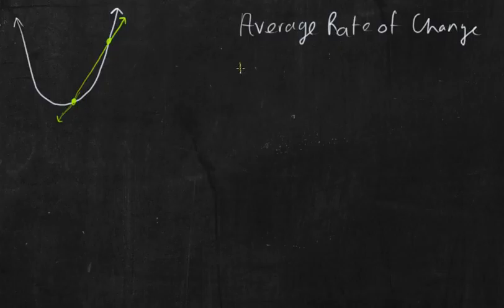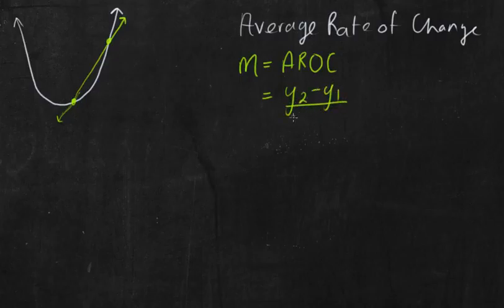And the slope of that secant line is equal to the average rate of change, what my students call the AROC. And of course, we know that slope is equal to Y2 minus Y1 all over X2 minus X1.